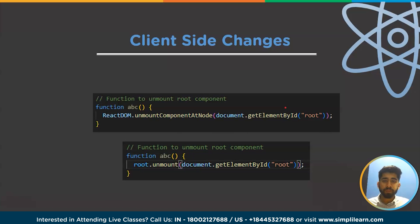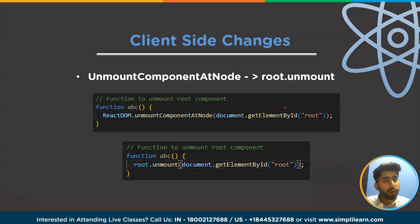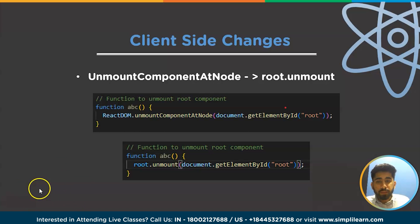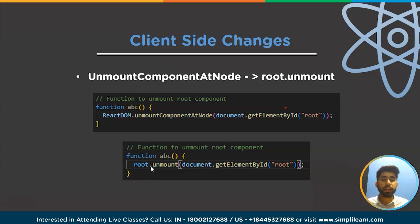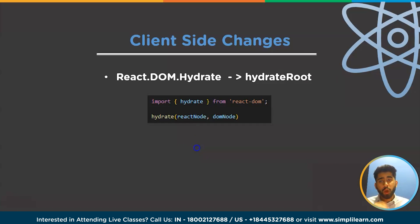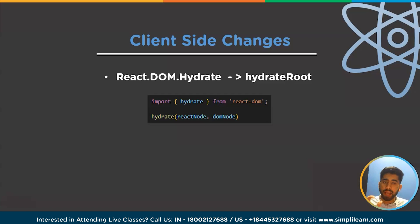The second client-side change: unmountComponentAtNode is now root.unmount. Previously we used unmountComponentAtNode, but now it's root.unmount. Additionally, ReactDOM.hydrate, which was used in React 17 and below to attach React to existing HTML rendered in a server environment, is now converted to hydrateRoot.